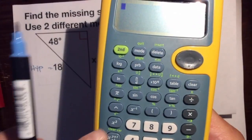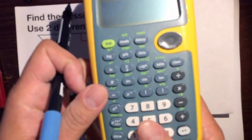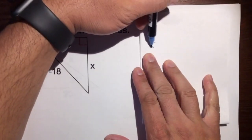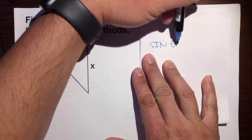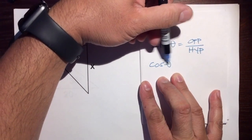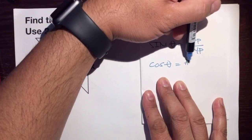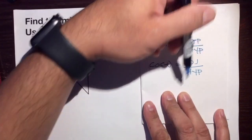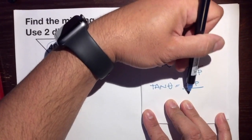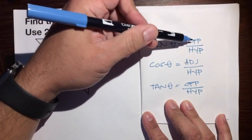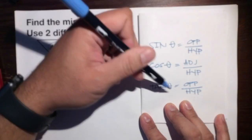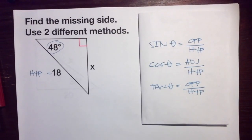Our last tool is sine, cosine, and tangent. We can use these because we have an angle and a right triangle. A quick review: sine of theta equals opposite over hypotenuse; cosine of theta equals adjacent over hypotenuse; and tangent of theta equals opposite over adjacent. SOH-CAH-TOA.